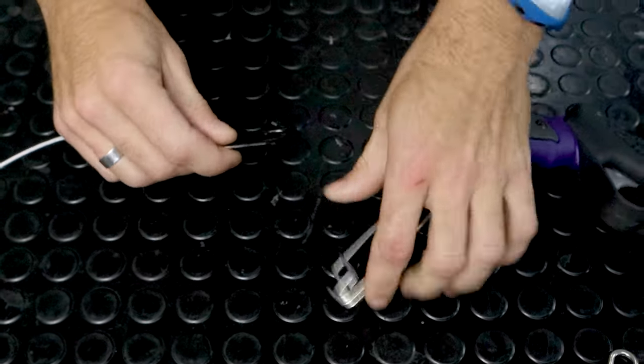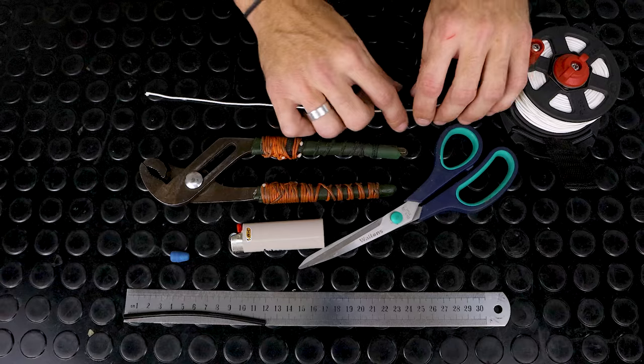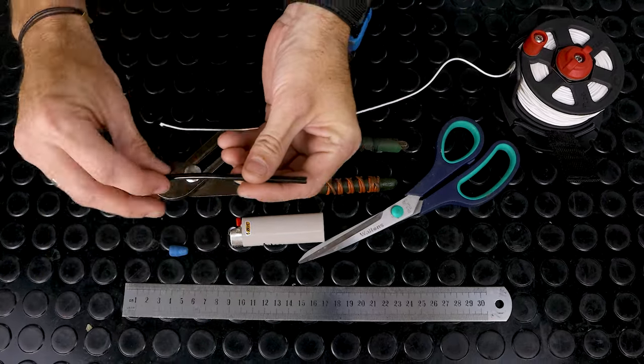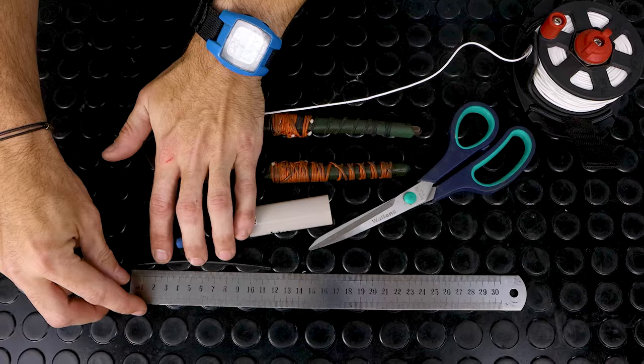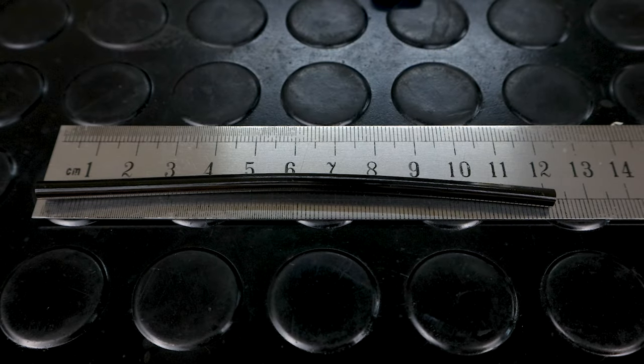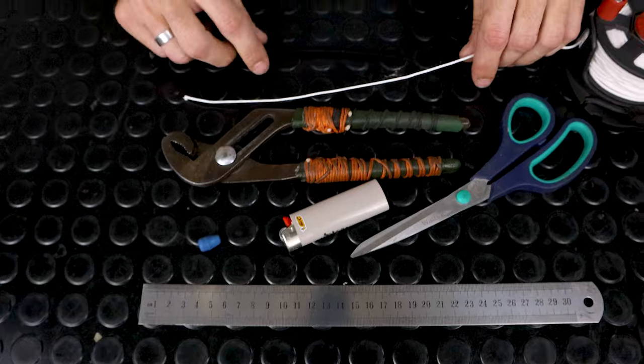So how do we make this loop? Cut a length of tube about 12 centimeters long. Any tube will do that's got a sufficient size hole for the tumor line to fit through.